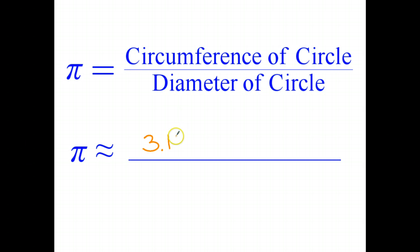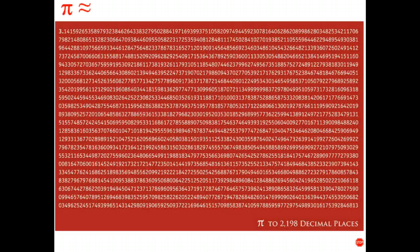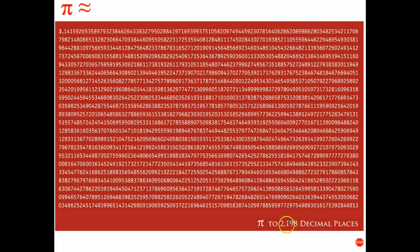There are other ways of calculating pi, and it turns out that pi goes on forever, and there's no pattern to the digits. So to five decimal places, pi is 3.14159. If you want more decimal places than that, well, here is pi written out to 2,198 decimal places.